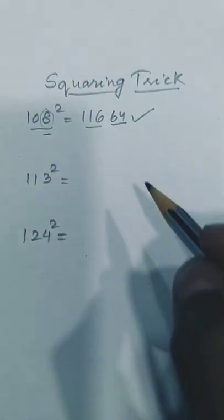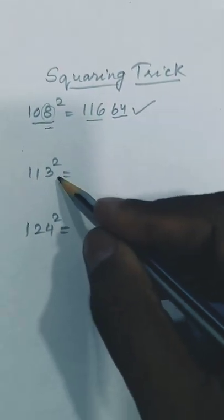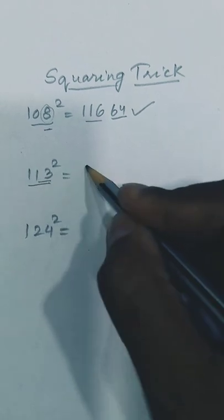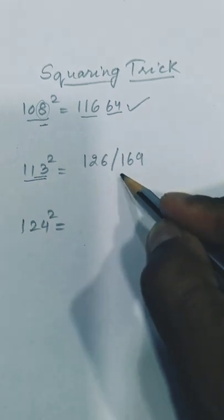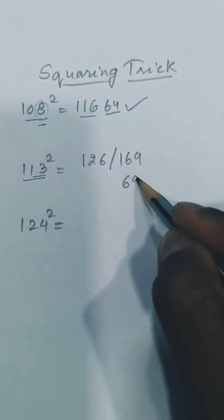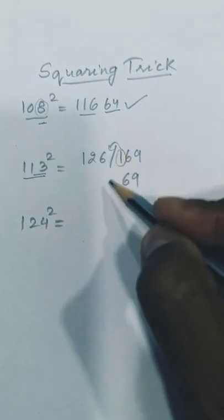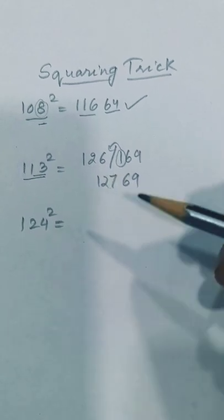We got the answer. But let's see 113 square. 113 plus 13 is 126 and 13 square is 169. Three digits? Let's take two digits and carry forward this one. So 12769 is the answer.